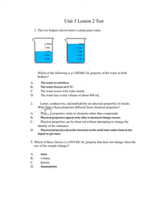Number 2. Luster, conductivity, and malleability are physical properties of metal. What makes these properties different from chemical properties? A. Physical properties relate to elements rather than compounds. B. Physical properties appear only after a chemical change occurs. C. Physical properties can be observed without attempting to change the identity of the substance. D. Physical properties describe elements in a solid state rather than a liquid or gas state.